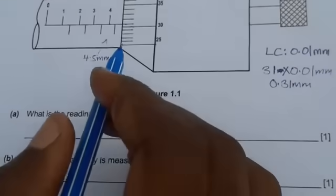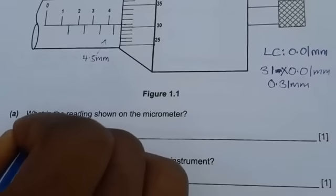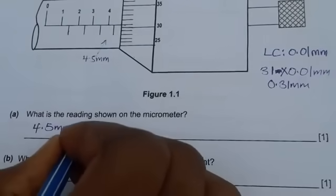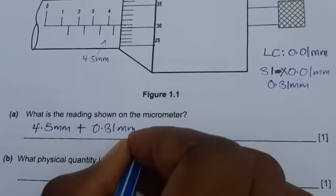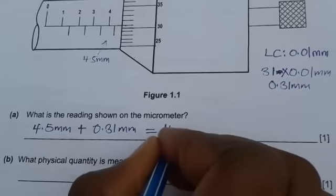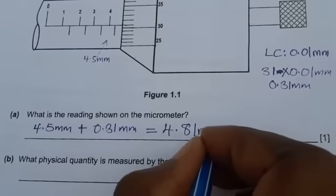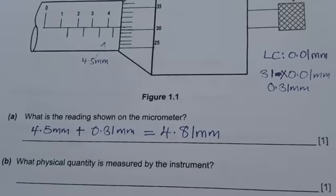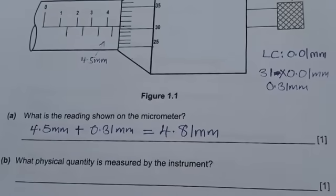What is needed now is just for you to add the sleeve reading and thimble reading. So we are going to add 4.5 millimeters plus 0.31 millimeters, which gives 4.81 millimeters. So the reading is 4.81 millimeters for this particular micrometer screw gauge.